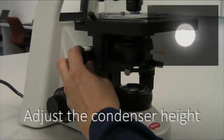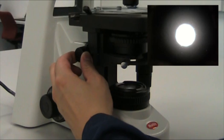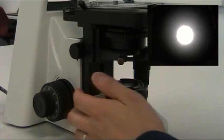The condenser focuses the incoming light onto your specimen. To make sure the light is focused at the right plane, adjust the height of the condenser until the edges of the field diaphragm become sharp.